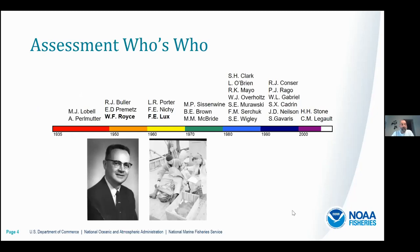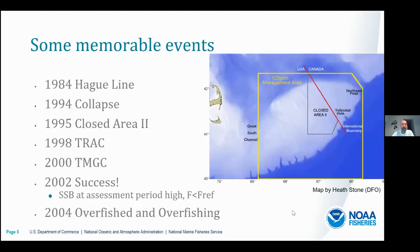Starting with the history review — this is a slide from a talk I gave back in 2006 that showed all the different people who've been involved in the assessment of George's Bank Yellowtail Flounder over the years. The two people pictured and bolded from the 1950s and 60s are Royce and Lux, the real progenitors of Yellowtail Flounder biology and fishery stock assessment. If you look through the names you'll see a lot of familiar ones, and I'm certainly standing on the shoulders of giants as I took over in the early 2000s for this stock assessment.